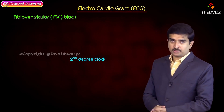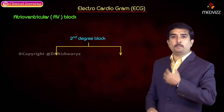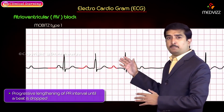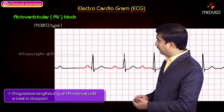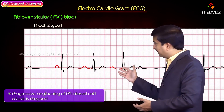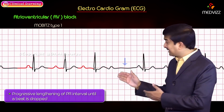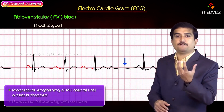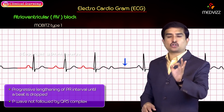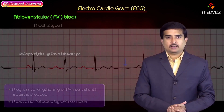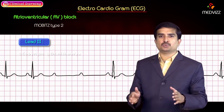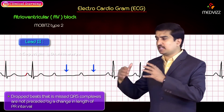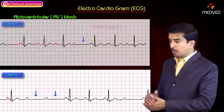Second degree heart block is divided into Mobitz type 1 and Mobitz type 2. In Mobitz type 1, there is progressive lengthening of the PR interval across successive beats until a beat is dropped — that is, a P wave not followed by a QRS complex. In Mobitz type 2, dropped beats with missed QRS complexes are not preceded by any change in the length of the PR interval — this is the classic difference between Mobitz type 1 and type 2.